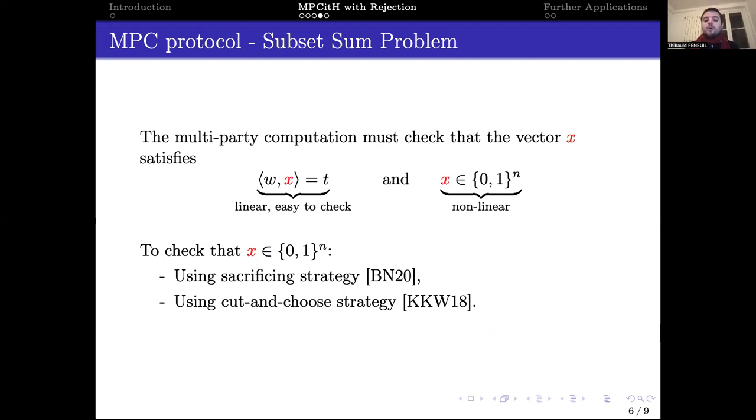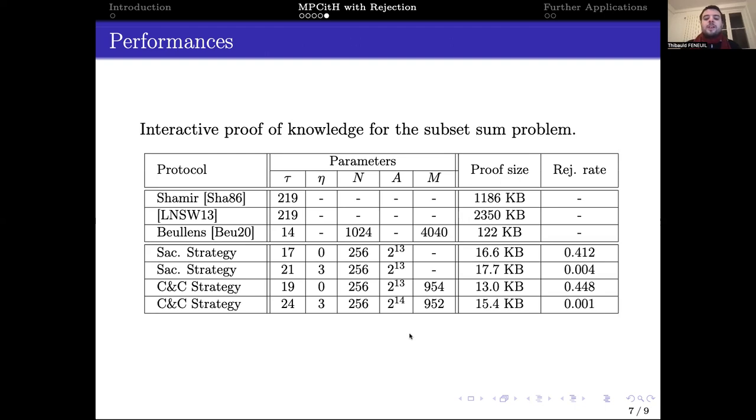Now that we know how we will share the secret, we can define the MPC protocol we will use in the MPC-in-the-head paradigm. In our work, we propose two protocols. The first one uses the sacrificing strategy of Baum and Nof, while the second one uses a cut-and-choose strategy. The resulting protocols can achieve communication costs below 20 KB, while the former proposals have communication costs larger than 100 KB.